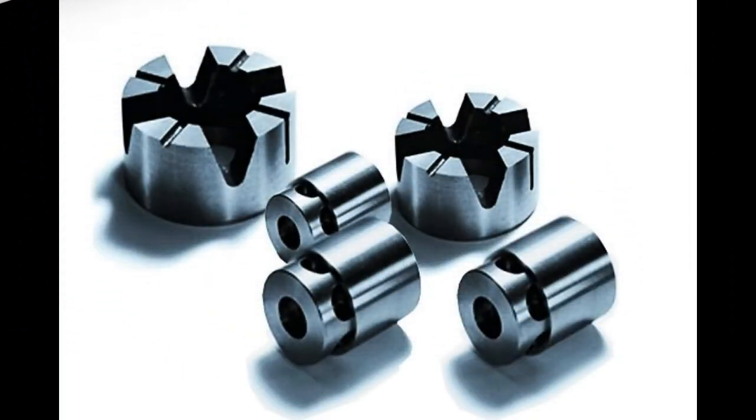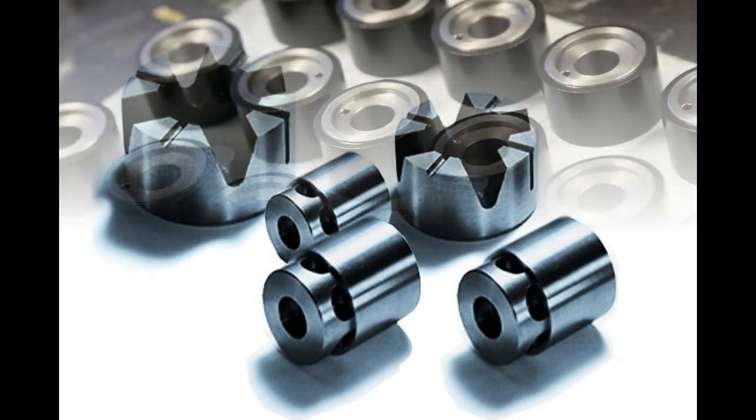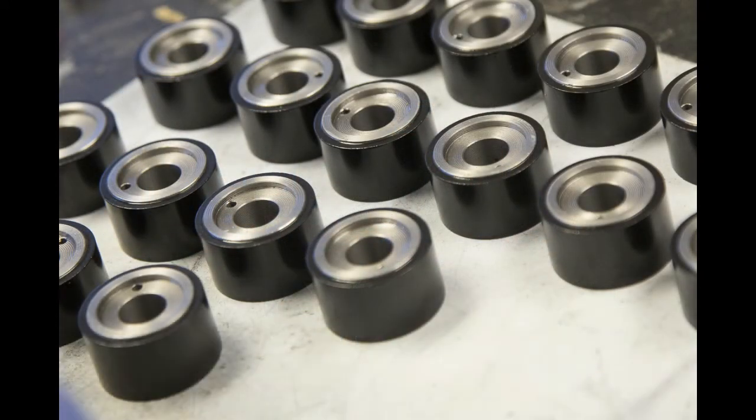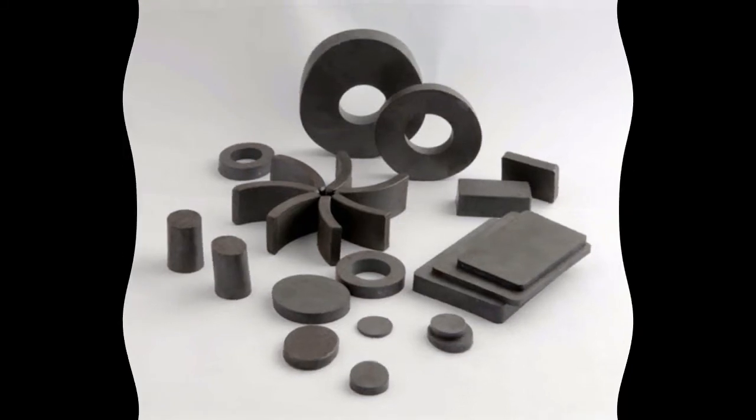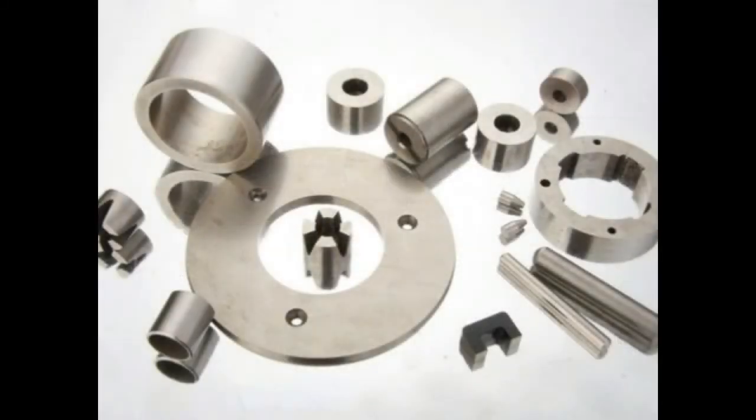Alnico. Alnico magnets get their name from the first two letters of each of three main ingredients: aluminum, nickel, and cobalt. Although they feature good temperature resistance, they can easily be demagnetized and are sometimes replaced by ceramic and rare earth magnets in certain applications.